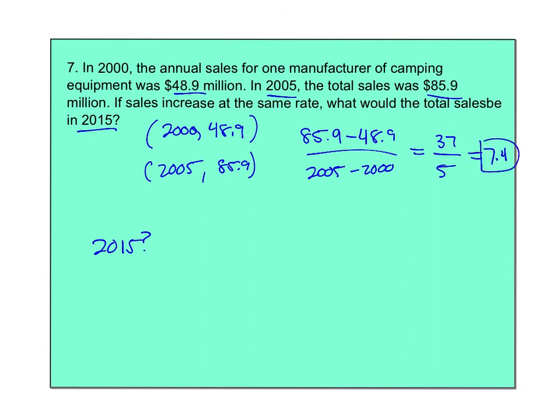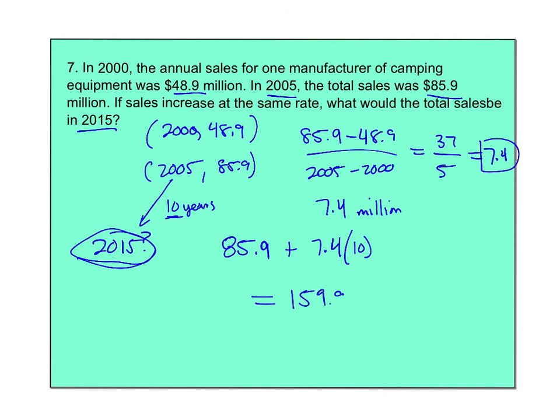This becomes 37 over 5, which is a little more than 7, so it's going to be 7.4. So that means per year, it's an increase of 7.4 million. Now they want it in 2015. From 2005 to 2015, that's 10 years. So I could say, in 2005 it was 85.9 million plus my rate of change, which is 7.4 times my year. So that's 10 years. So I'm going to take 85.9 plus 74. That's going to give me 159.9 million dollars. Nothing too terrible. But my key here is my setup to figure out my slope. Only then can you go back and answer the question.